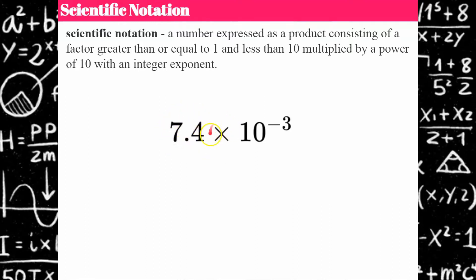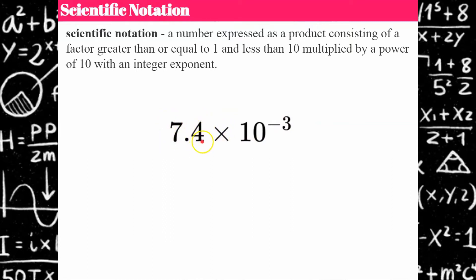So you have a factor, and you have the multiplication sign, then base 10 — a power with a base of 10 and an exponent. Your exponent has to be an integer, and we say integer because it can be negative. Your integer exponent can be negative, positive, or zero — all the integers, all the whole numbers, zero, and their opposites. So: a product, a factor that's equal to one or more but less than 10, and then a power of 10 with an integer exponent.